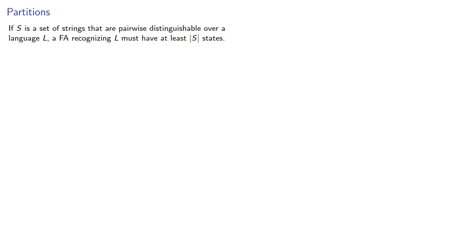If S is a set of strings that are pairwise distinguishable over a language L, a finite automaton recognizing L must have at least as many states as there are elements of S. But it could have more. So can we find an upper bound?